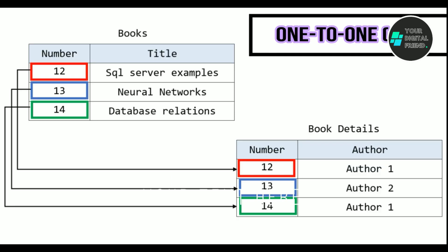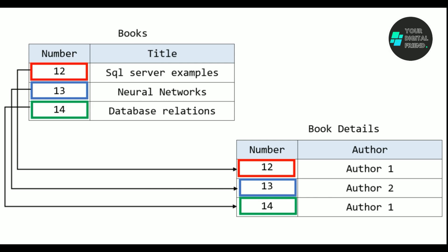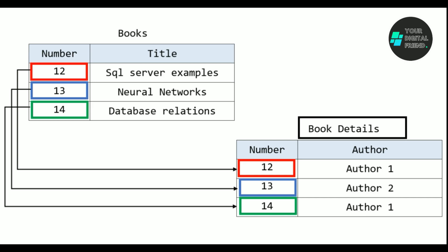One-to-one relationship. A one-to-one relationship exists when each record in one table corresponds to only one record in another table, and vice versa. For example, consider a database for a library. You have two tables: books and book details. Each book in the books table corresponds to exactly one record in the book details table, and each record in the book details table corresponds to exactly one book in the books table.